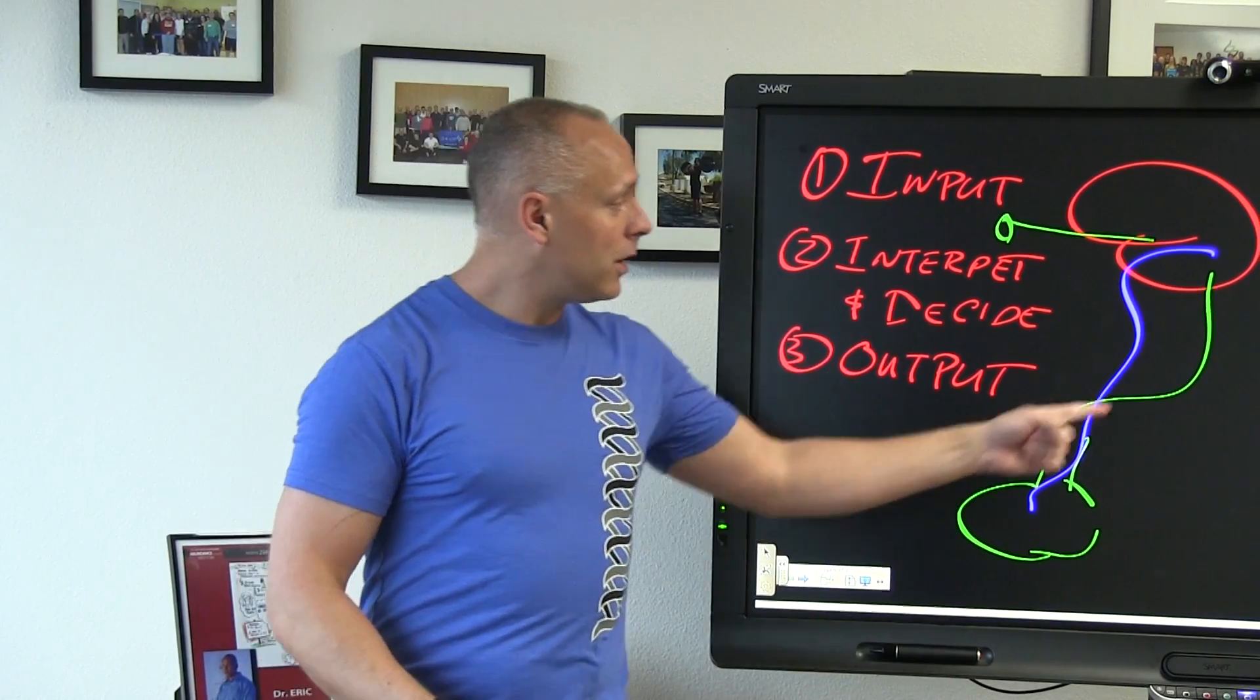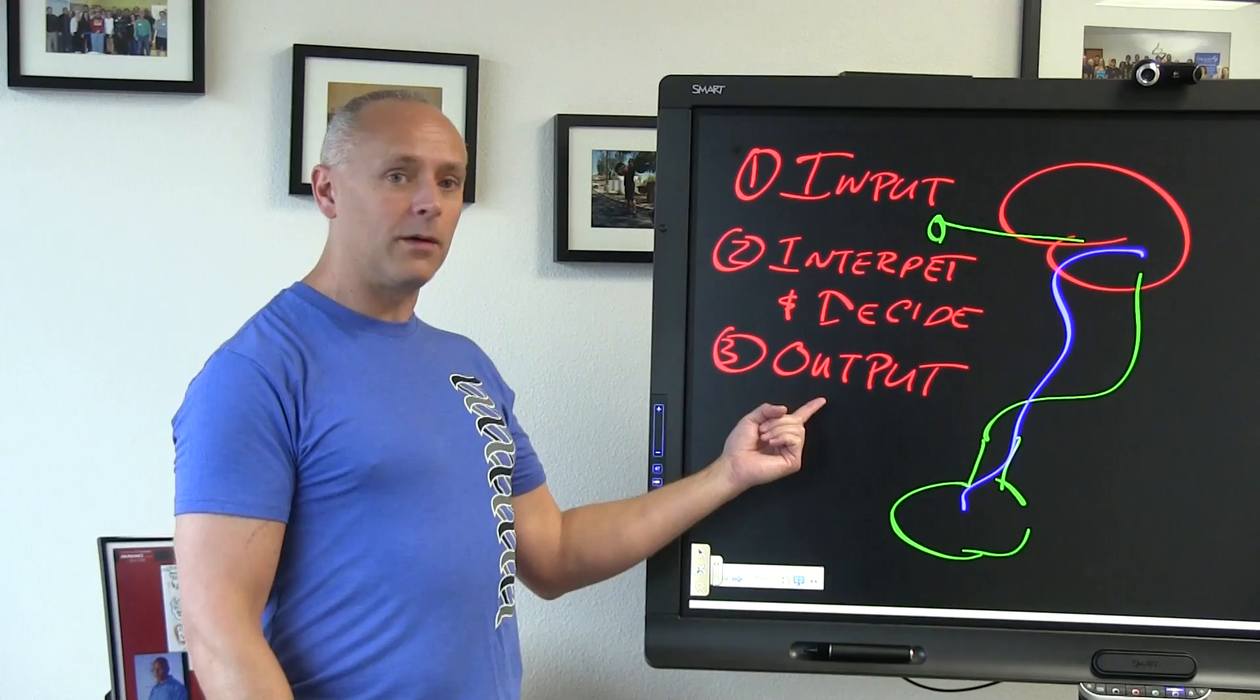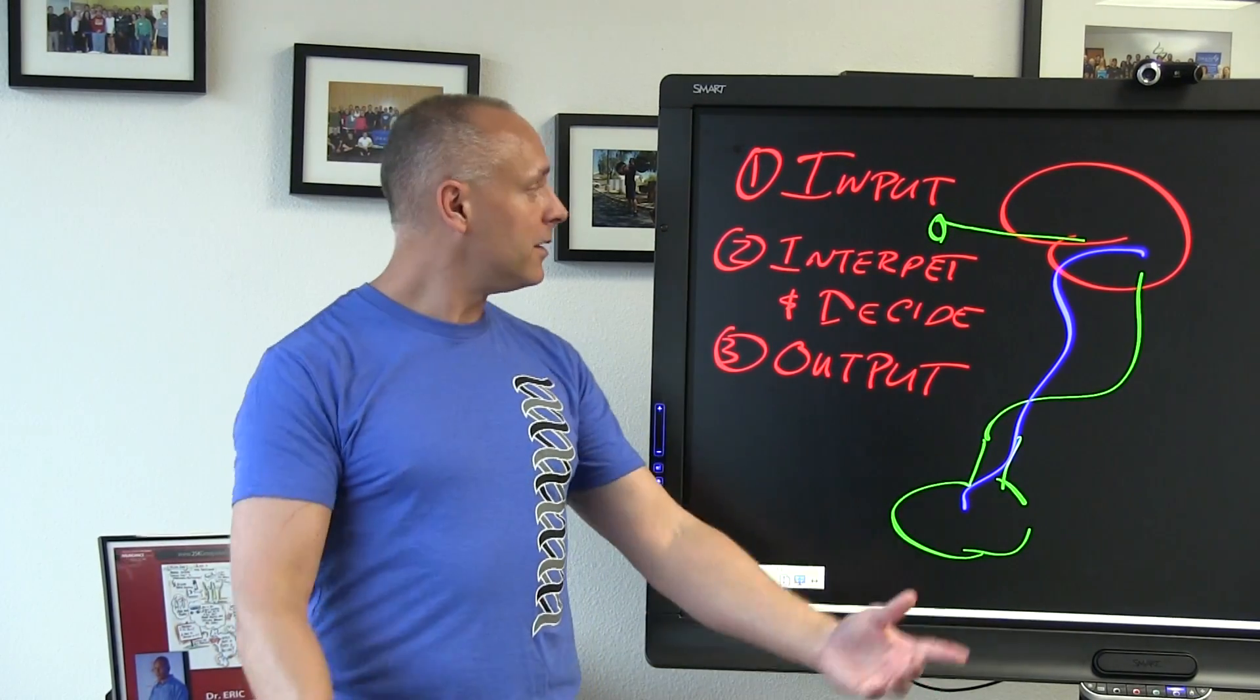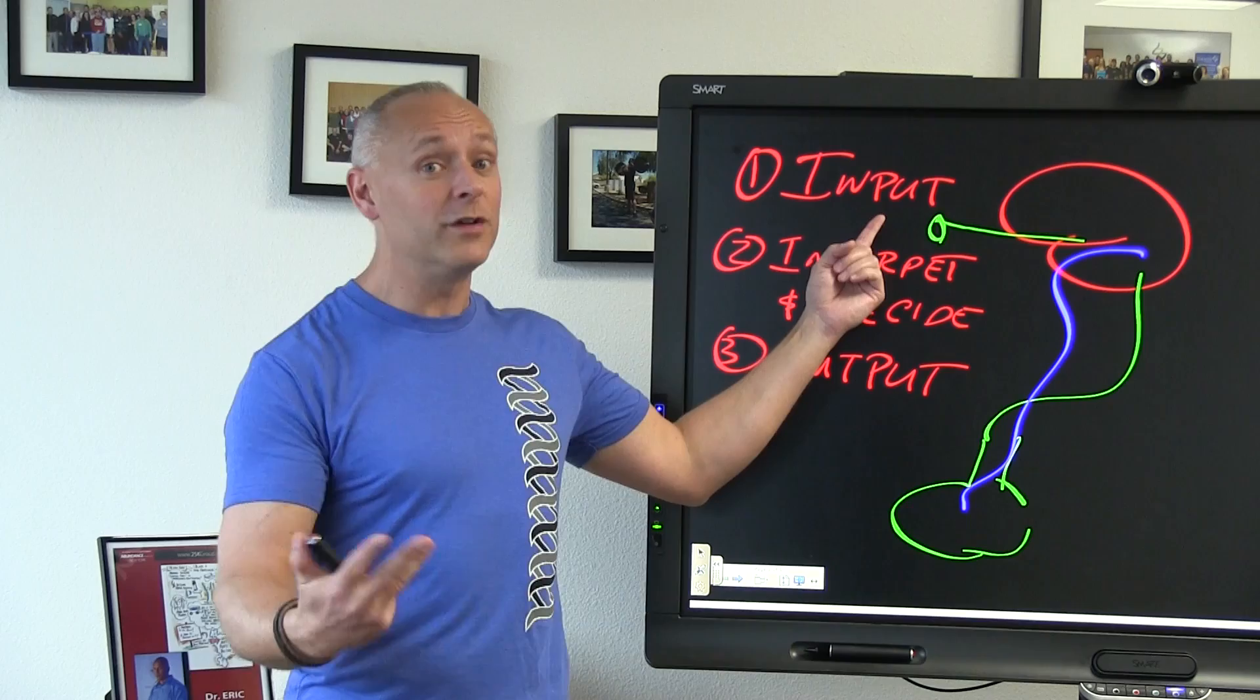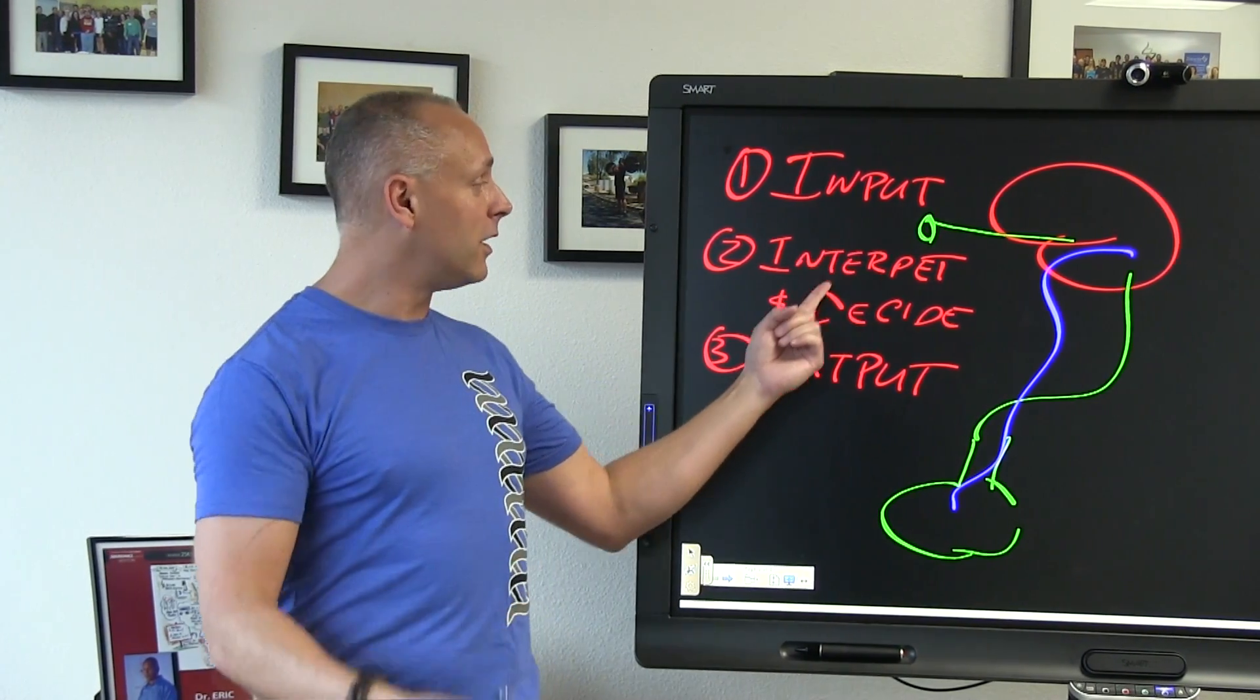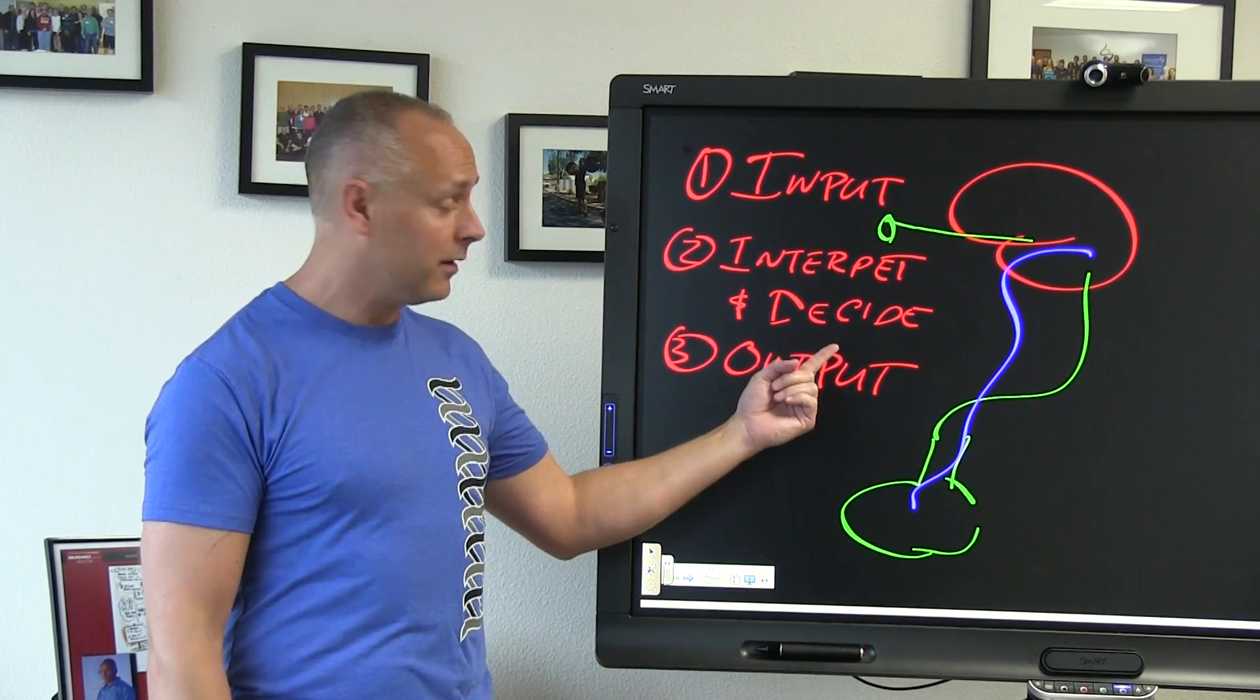Now, if you understand this, it's a loop system, which means that the quality of the output, the quality of what I'm able to generate in the world, is incredibly dependent upon the quality of the inputs that I receive. Am I getting good ones? Am I getting enough of them? Does my brain understand what they are? Can it interpret it? Can it decide what to do with them intelligently?